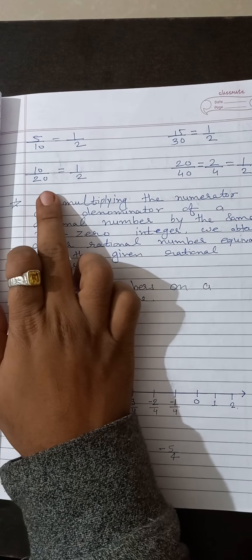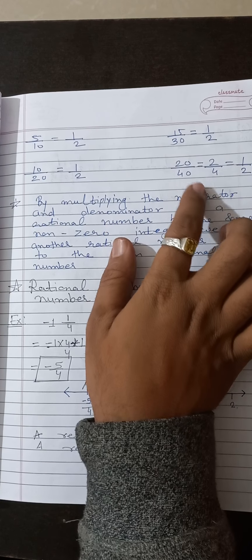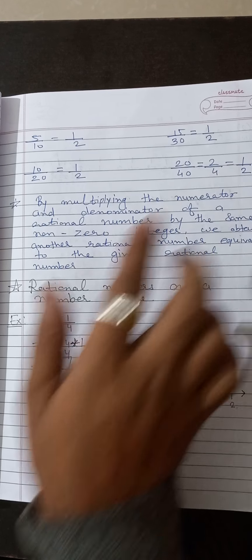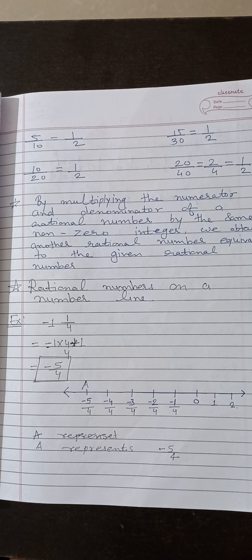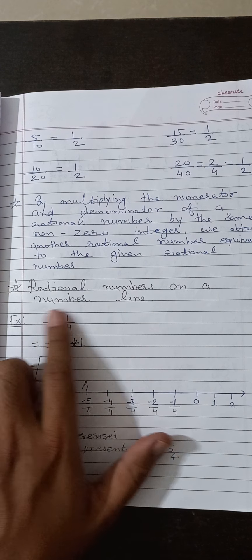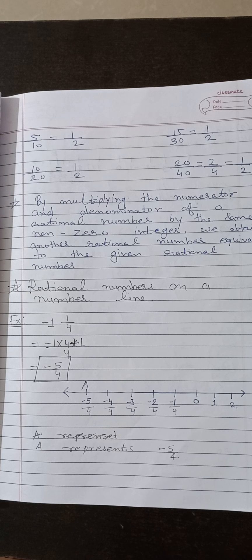Next, 10 by 20 — cancel, you get 1 by 2. And 20 by 40 — cancel 2 by 4, answer is 1 by 2. We can see that all of these are the same value, so we can say that these are equivalent rational numbers.